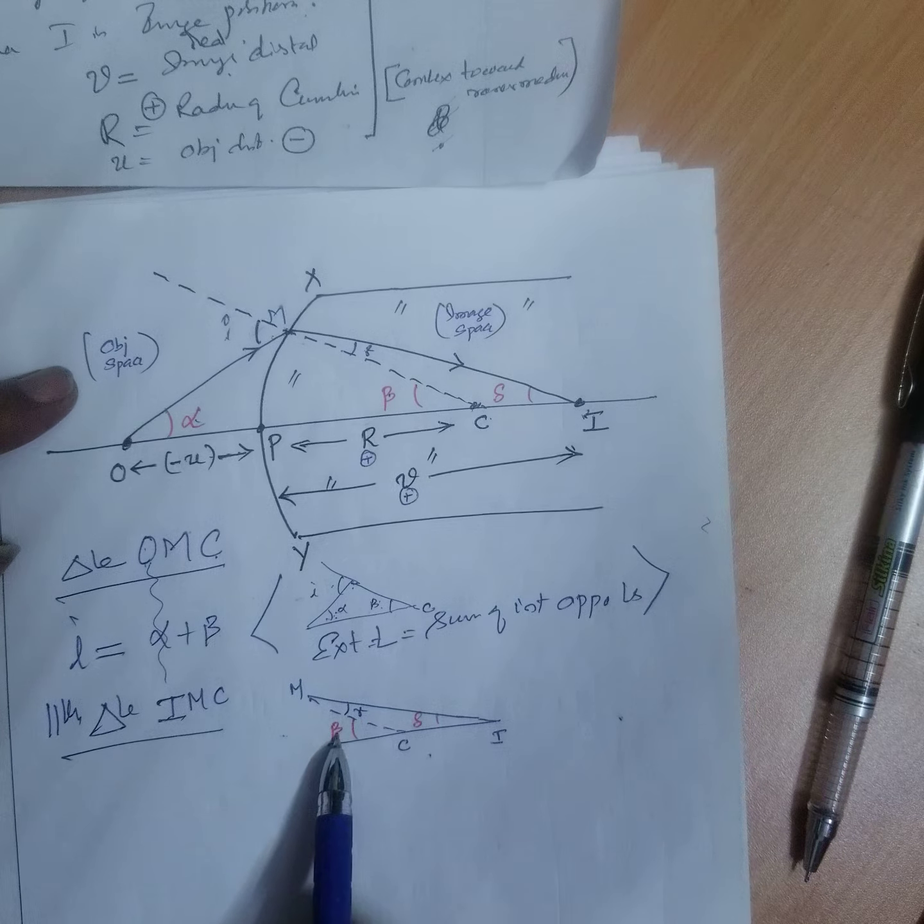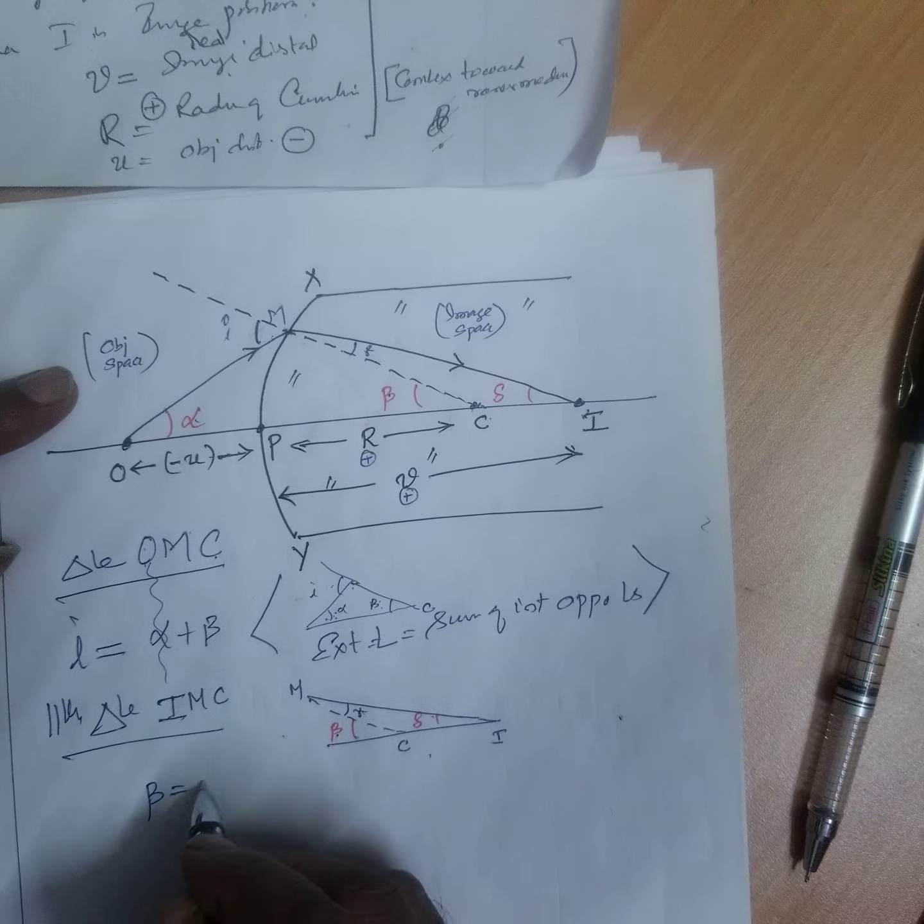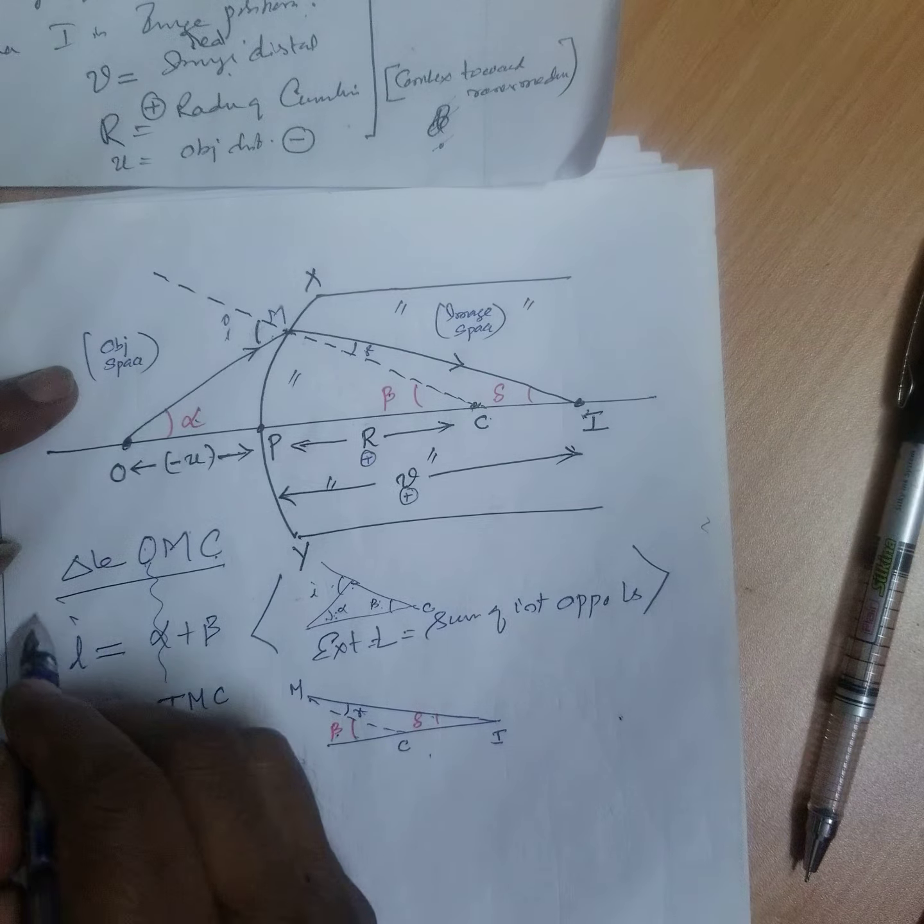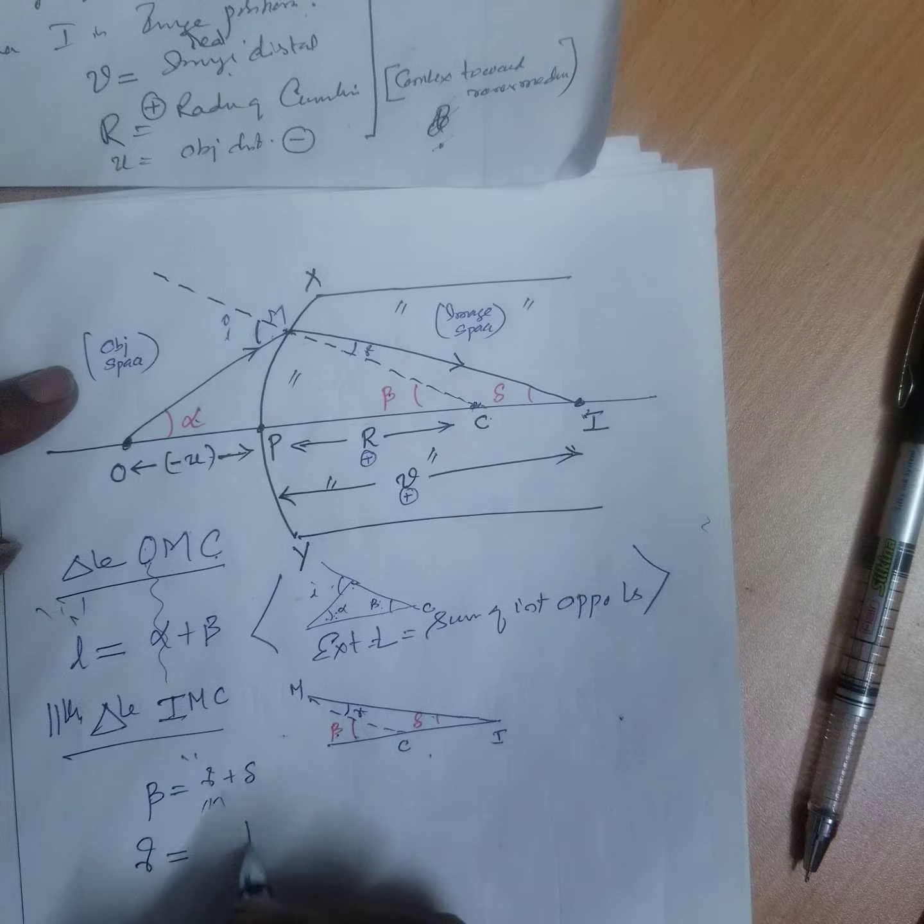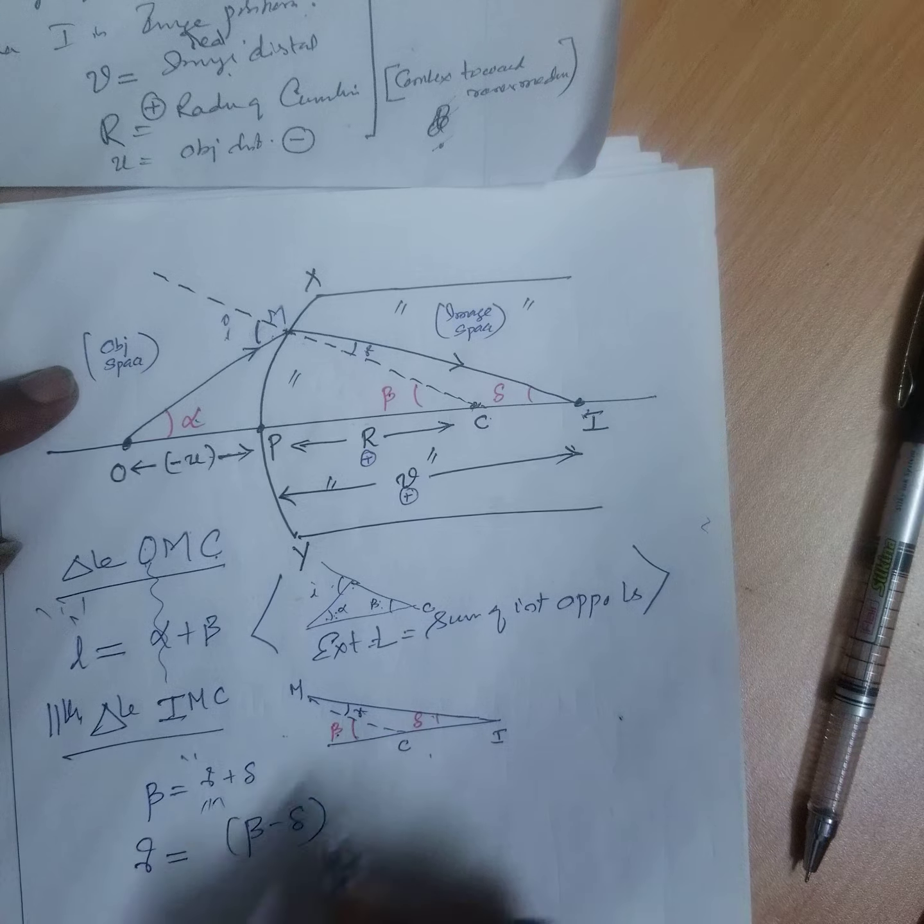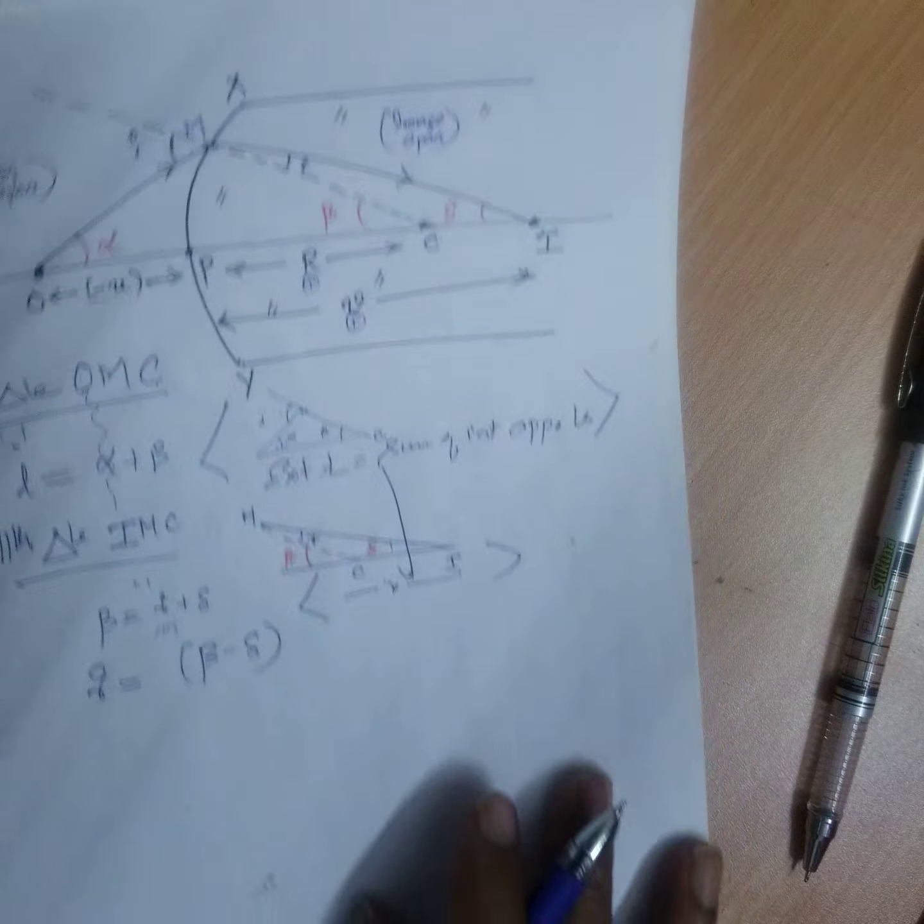Therefore, this is exterior angle. Beta exterior angle sum of interior opposite angle. R plus delta. See, you have taken I. Here you want R. Therefore, R is equal to beta minus delta. This is also for the same reason. Exterior angle sum of interior opposite angle.